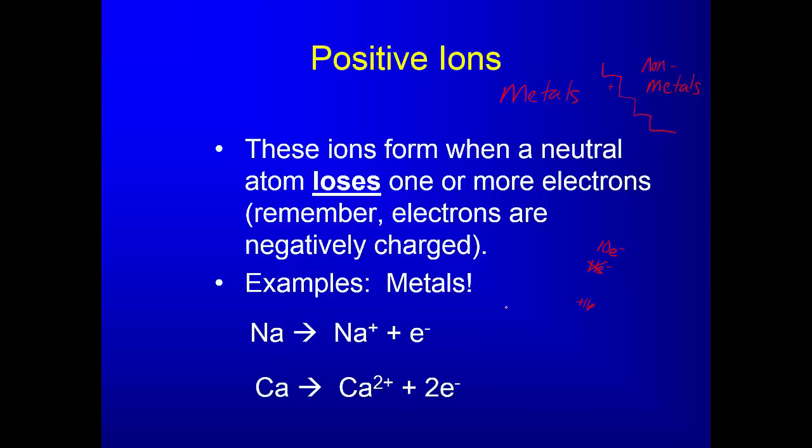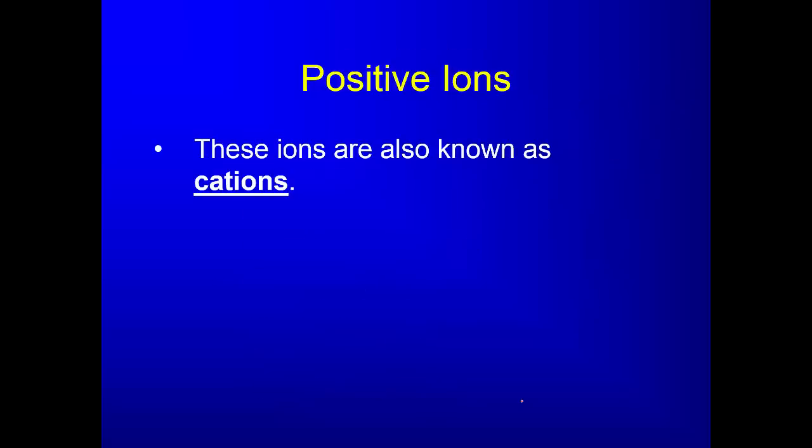Calcium is normally sitting with 20 positives and 20 negatives. When it loses two electrons, it's now going to have 20 protons which are positive but only 18 electrons, so it has a positive two charge. The charge matches up with how many electrons it is losing. These positive ions are known as cations.